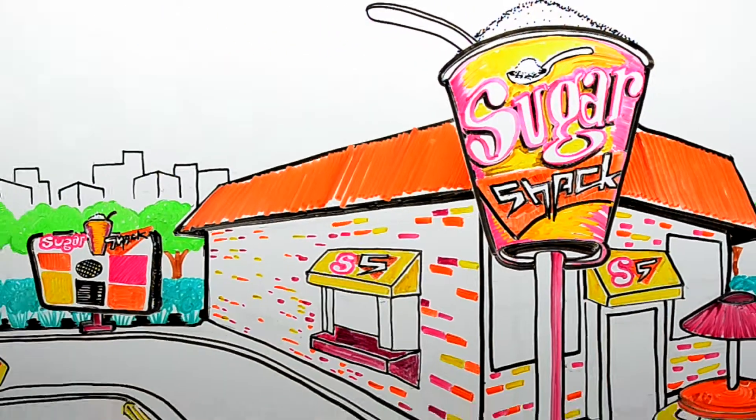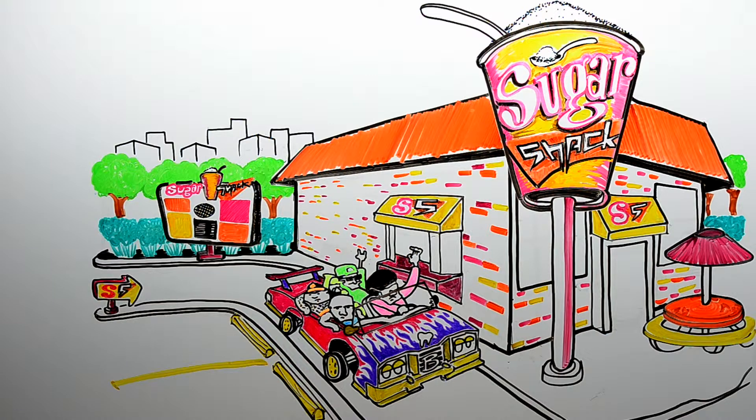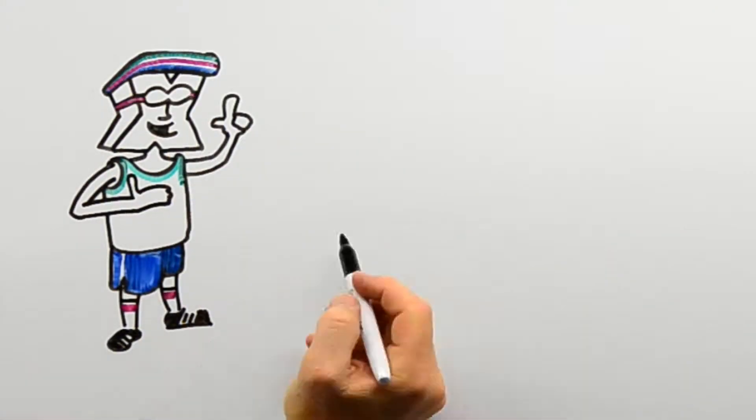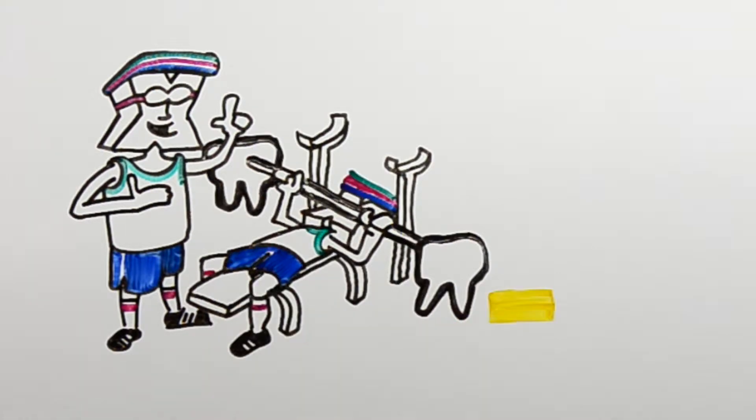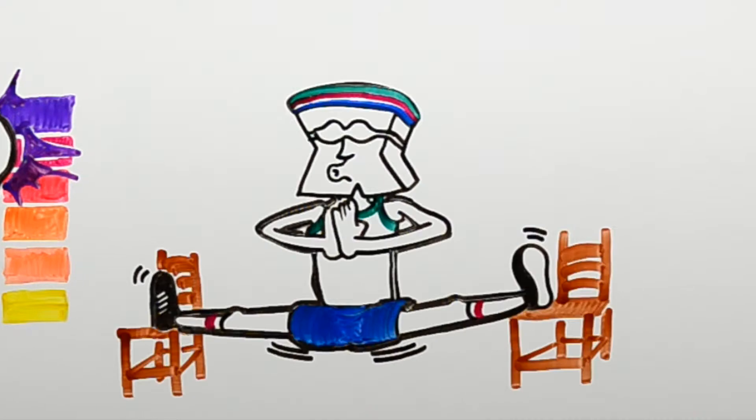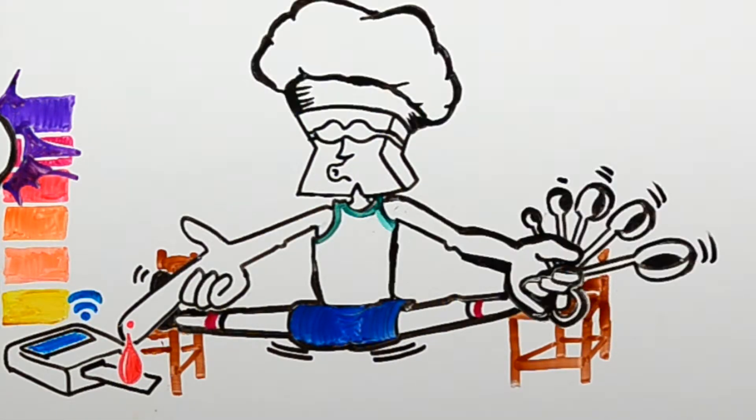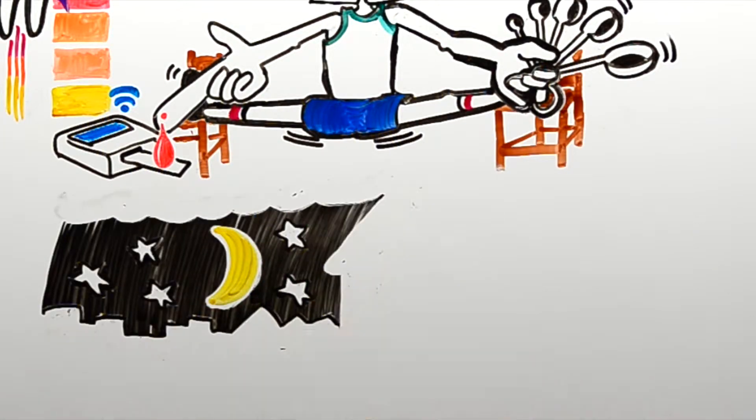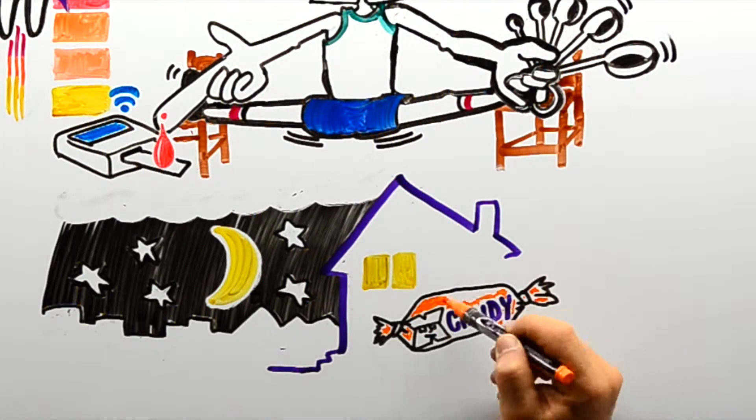Sugar feeds bacteria. Causes acid. Lowers pH. And demineralizes teeth. But I don't feed bacteria. I don't cause acid. I actually raise pH and aid tooth remineralization. I'm low on the glycemic index, meaning I'm great for diabetics. You can cook with me. But really, what could be easier than feeding candy? I mean, real beneficial candy. To kids.